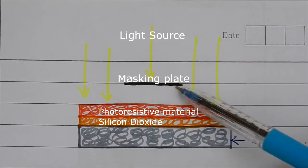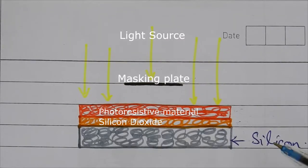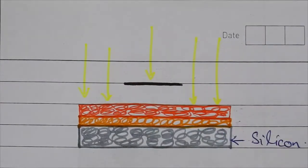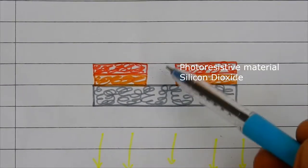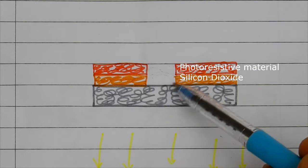When we mask portions of the photoresistive material from light, we get this result. We then perform etching to remove the silicon dioxide material.